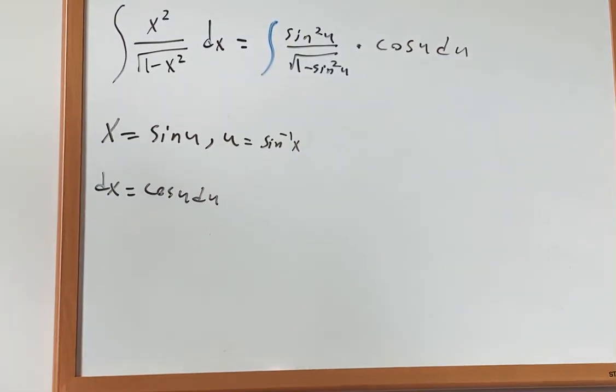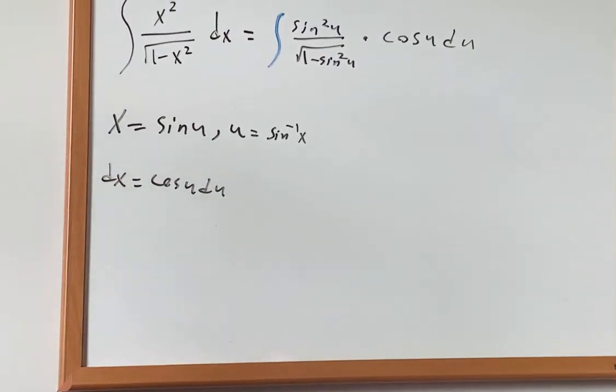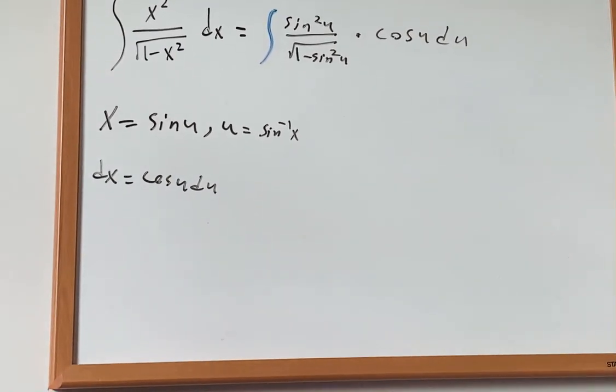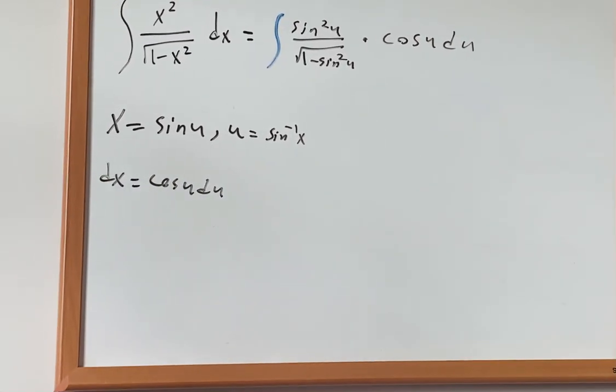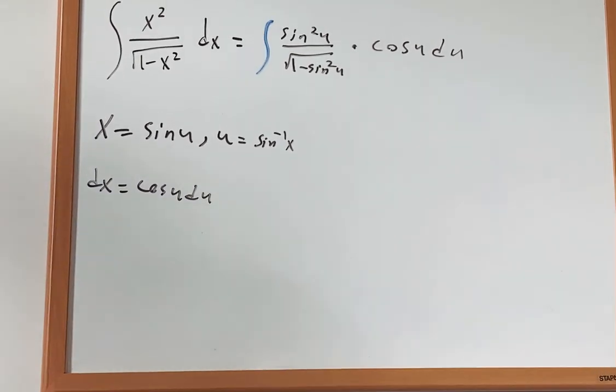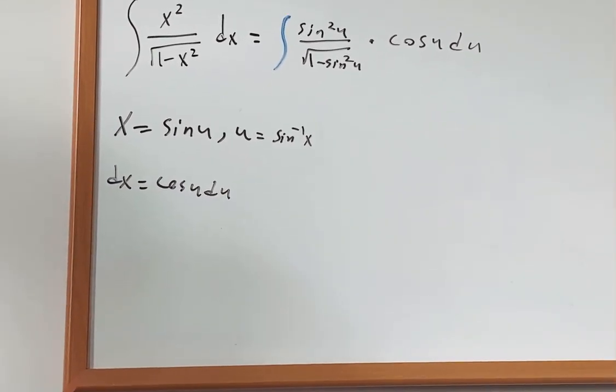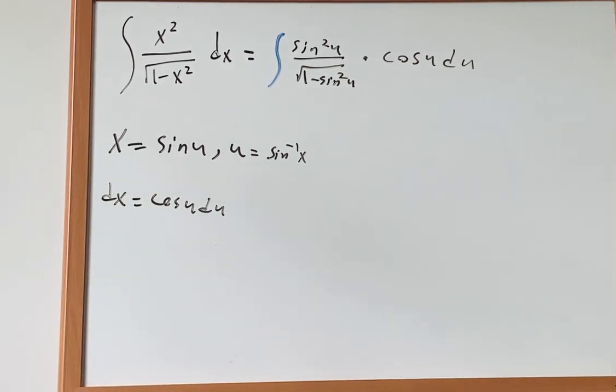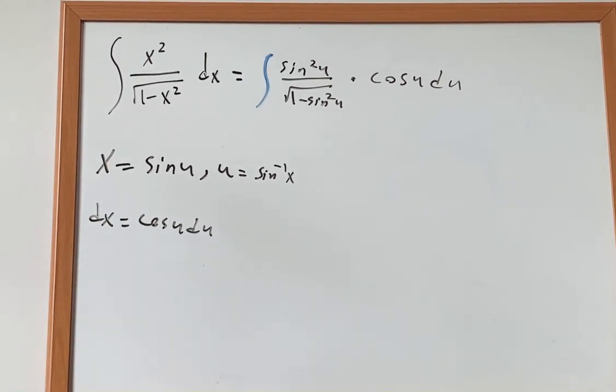Now, pay attention to the denominator. You can see that inside of the square root, there's a famous trig identity: 1 minus sine squared u is just cosine squared u, and the square root of cosine squared u,